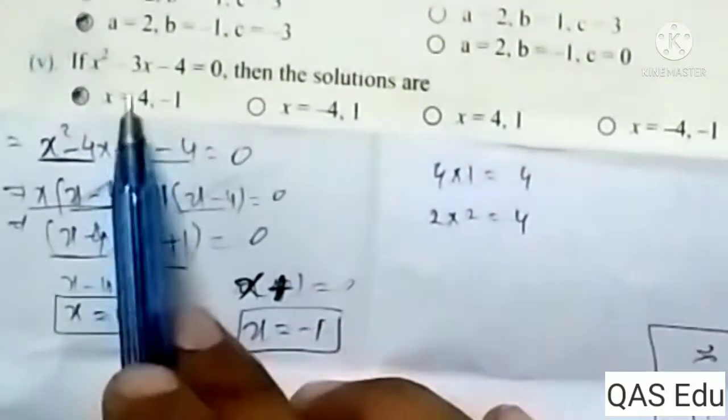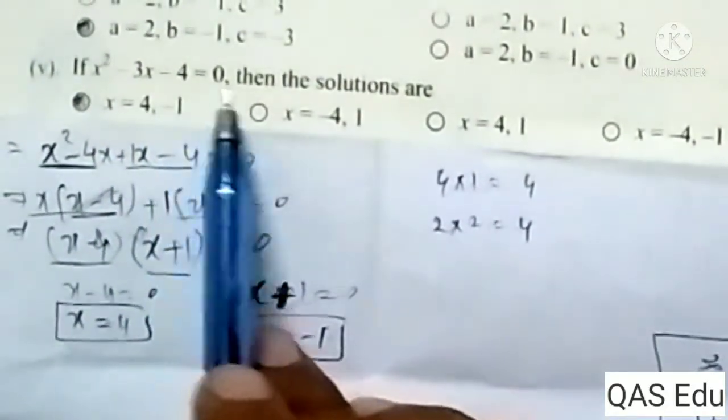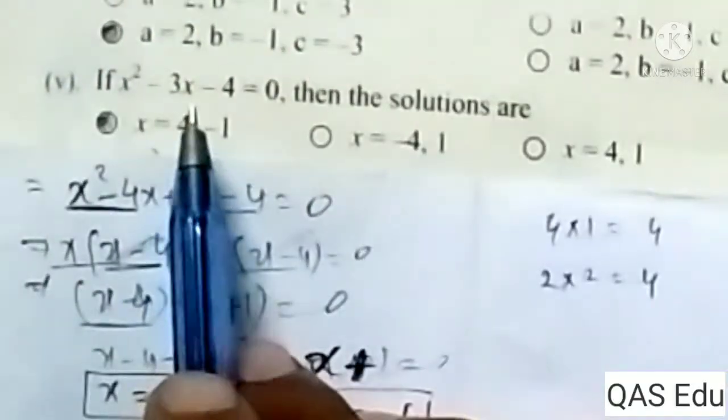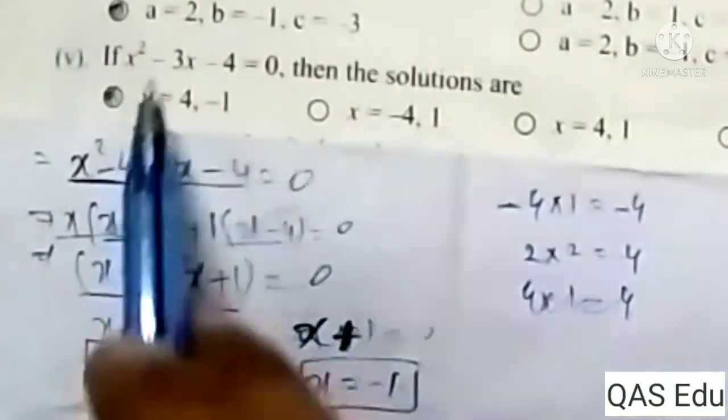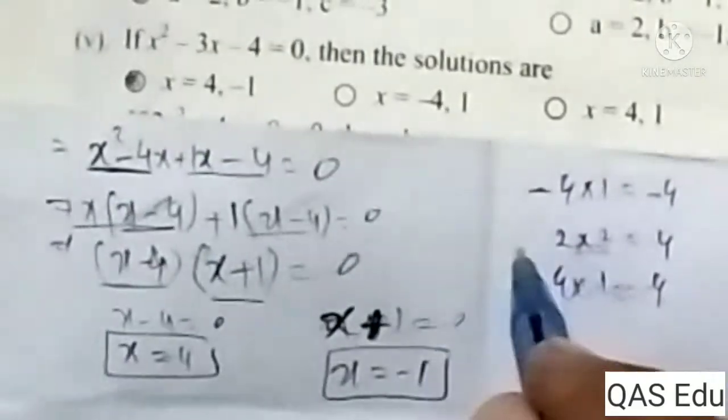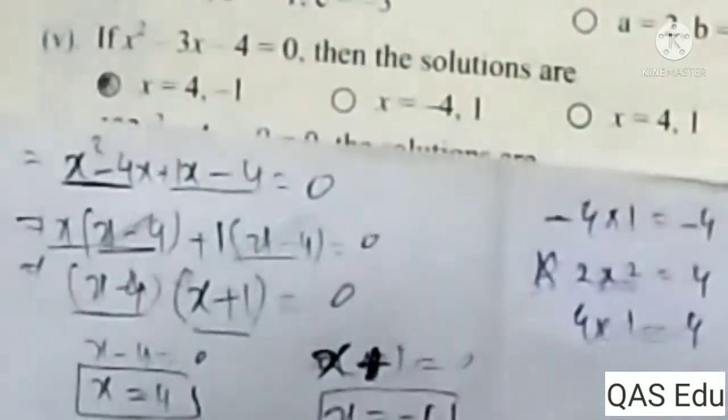We have number MCQs. If x squared minus 3x minus 4 equals 0, then the solutions are. We have to solve by factorization. We need two numbers that multiply to minus 4 and add to minus 3. Trying factors: minus 4 times 1 gives minus 4. So x squared minus 4x plus x minus 4 equals 0.